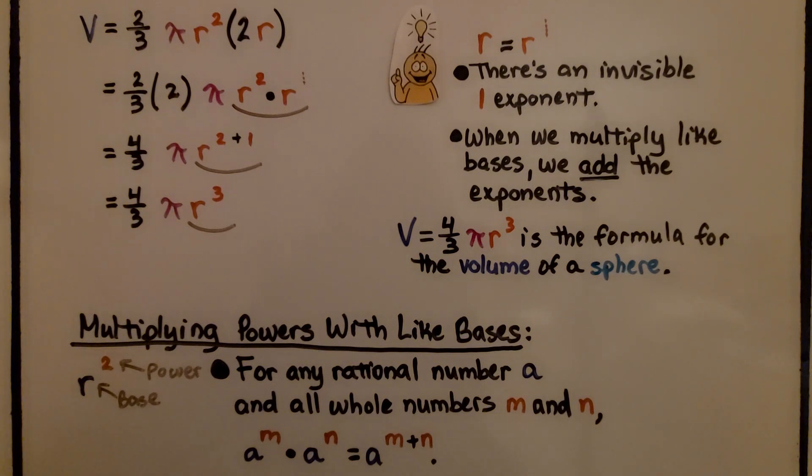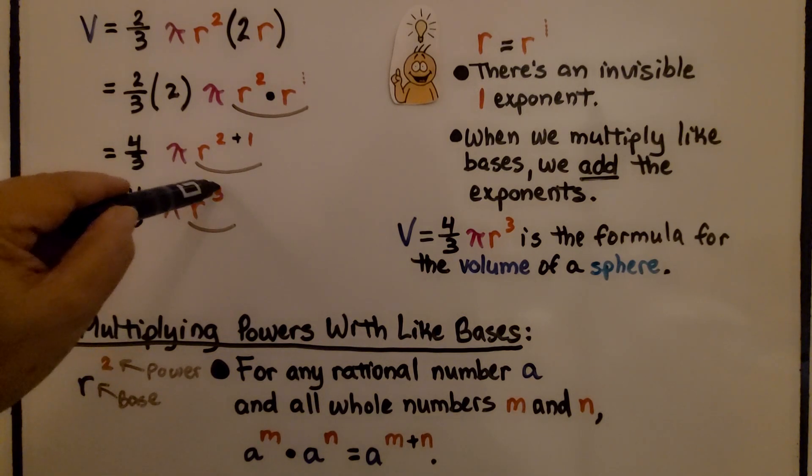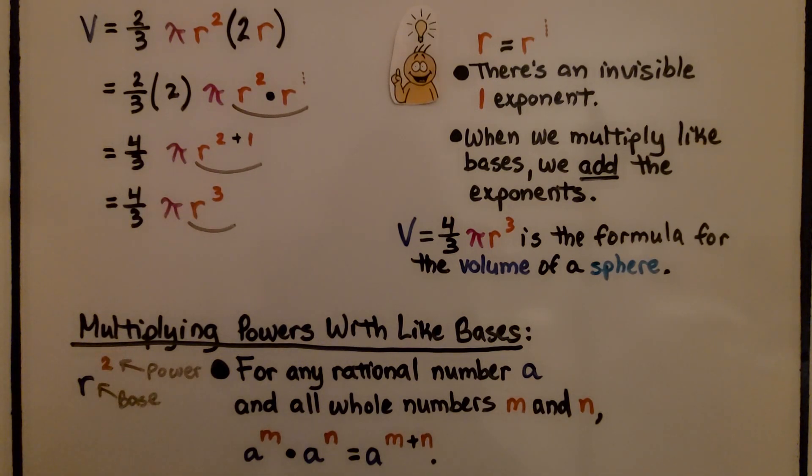Multiplying powers with like bases. So this is the base, that's the power. For any rational number a and all whole numbers m and n, we would have a to the m power times a to the n power. See how they have the same base a? It means we would add m plus n.